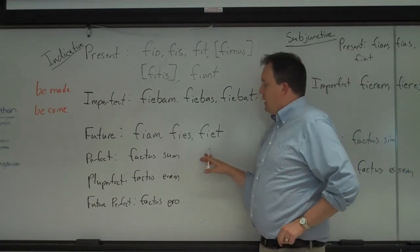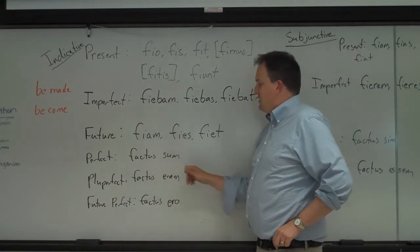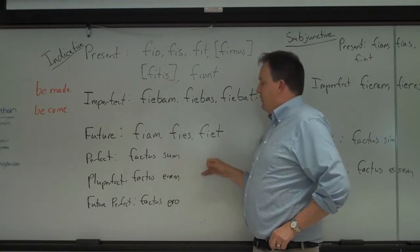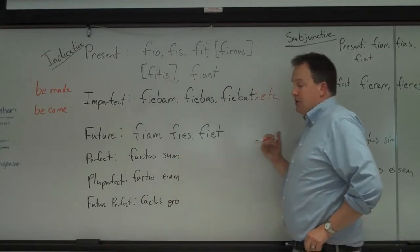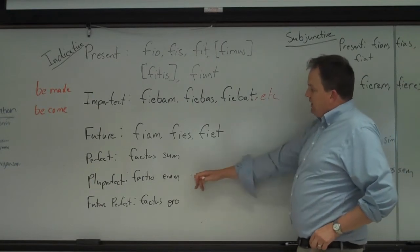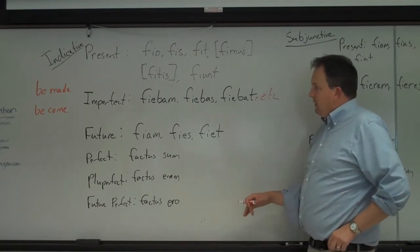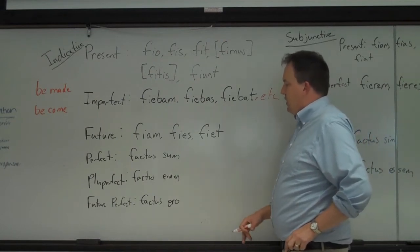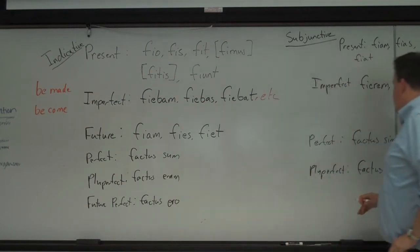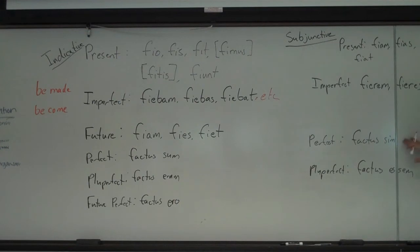Factus sum, I was made. So this is where it goes passive. And we'll just keep following the same pattern. It'd be factus est, factus est, facti sumus, et cetera. Factus eram would be pluperfect, I had become, or I had been made. Factus ero, I will have been made.